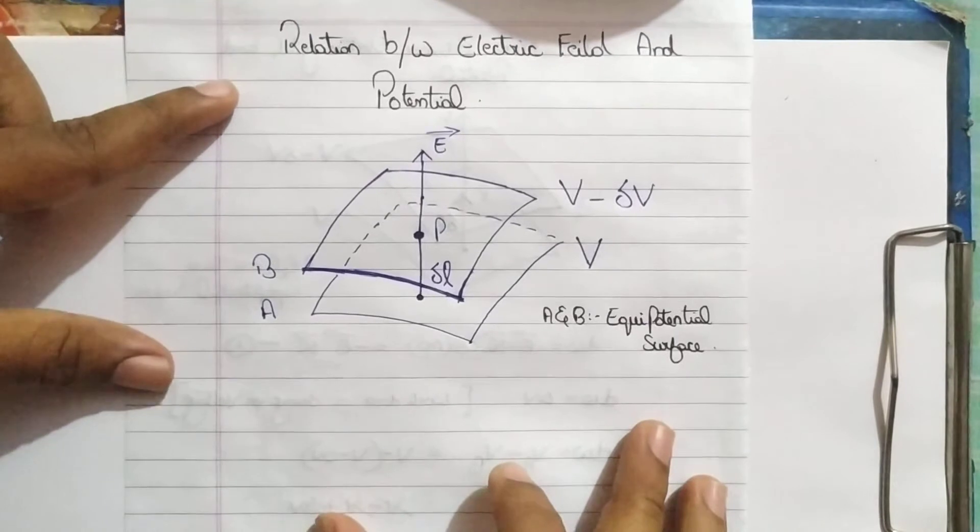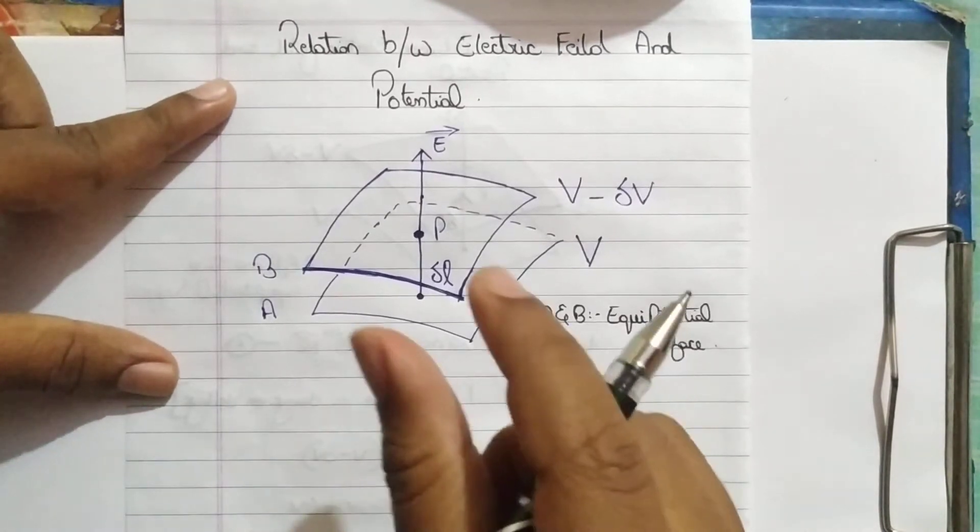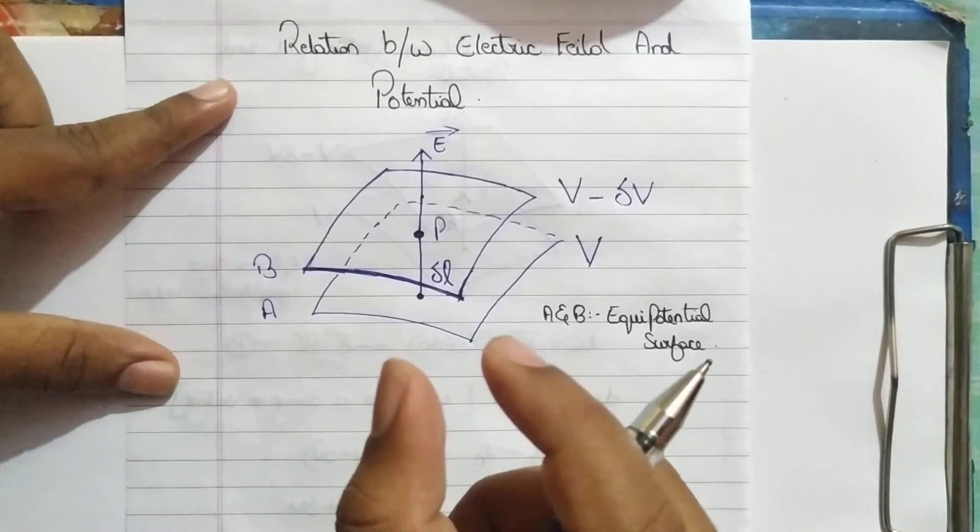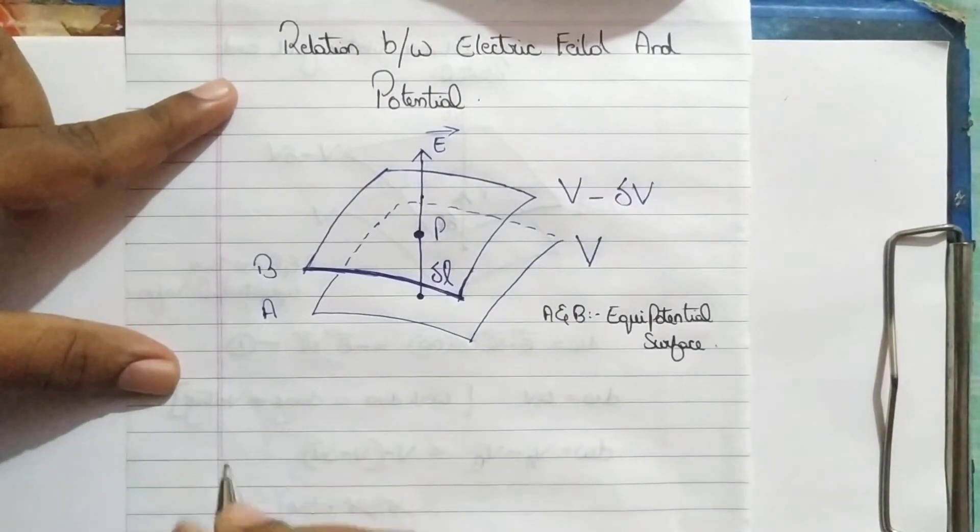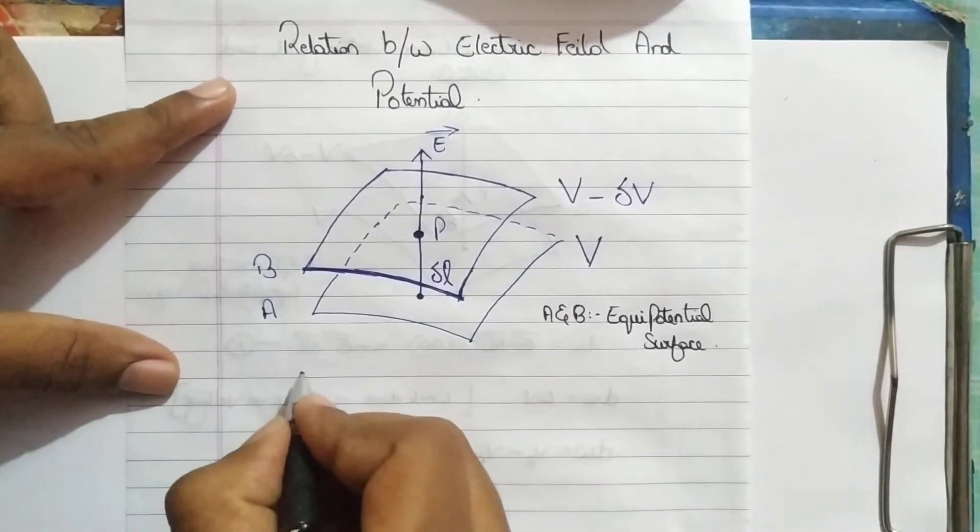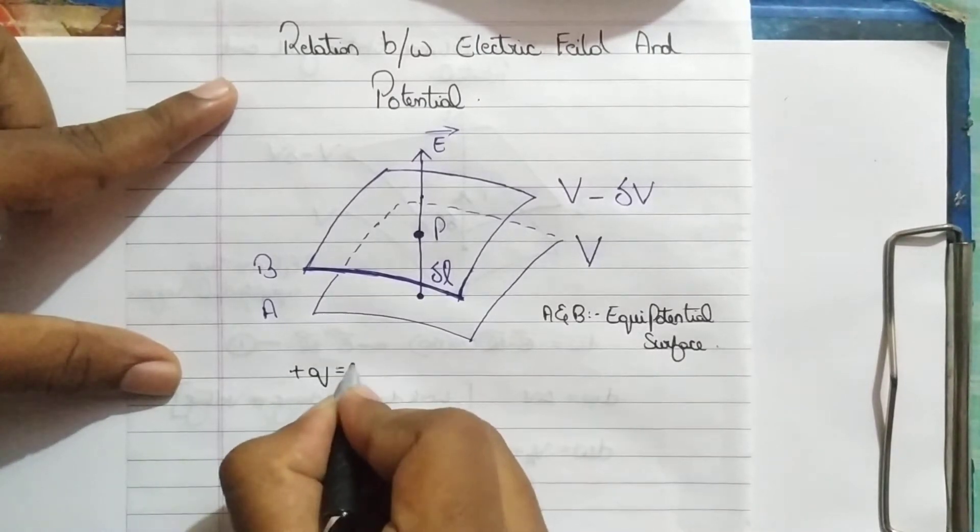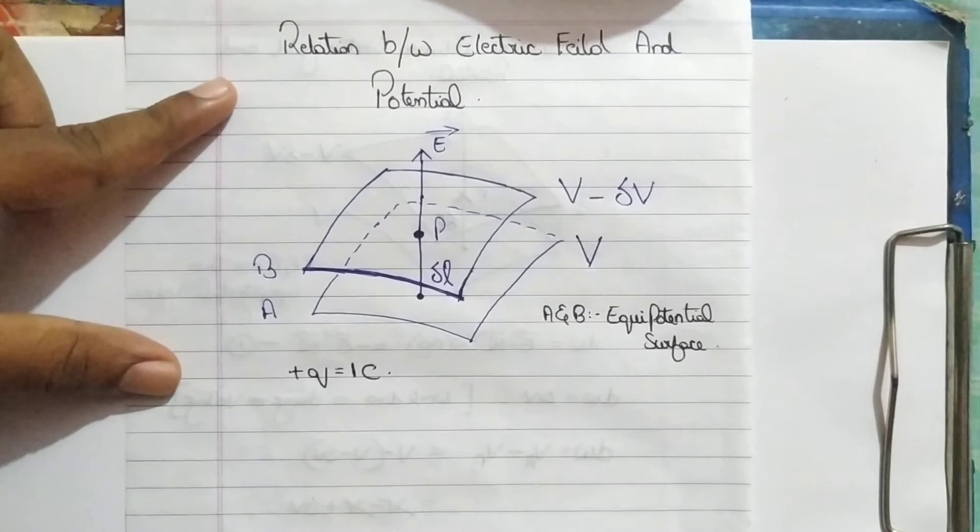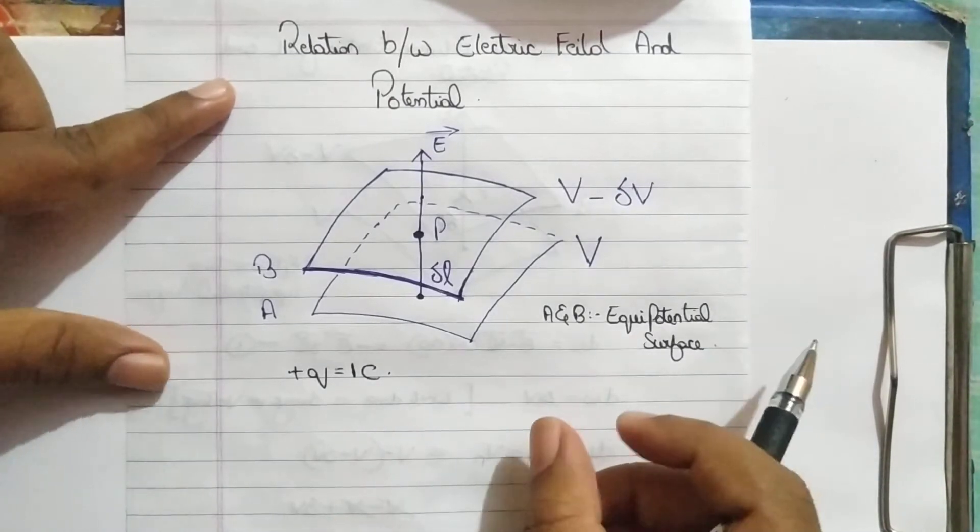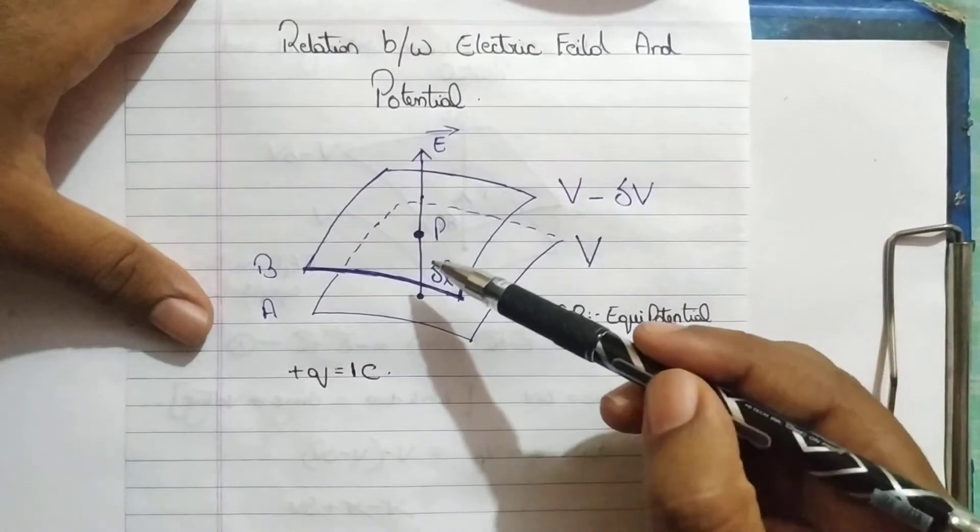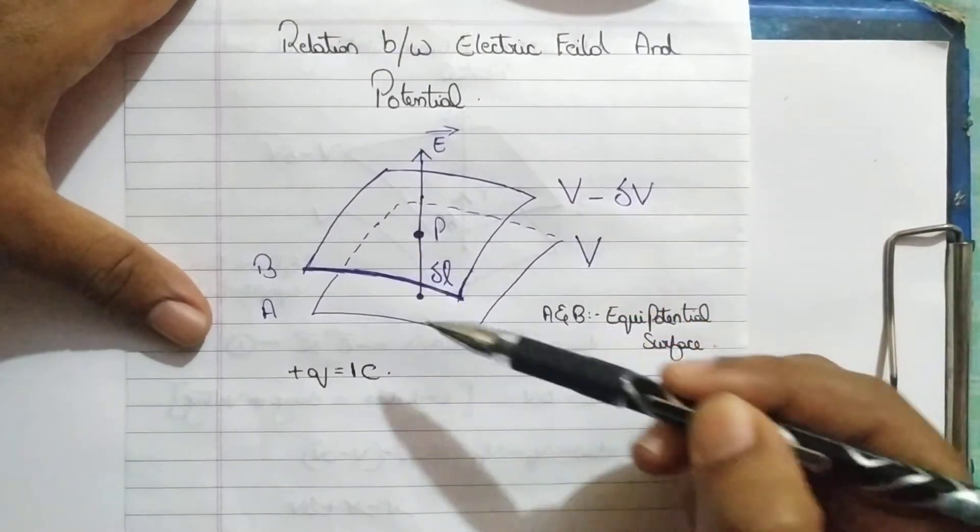As you all guys know, in most of our derivations, we have considered the test charge, which is a unit positive charge. We have also considered the same unit positive charge delta Q, which is 1 coulomb.